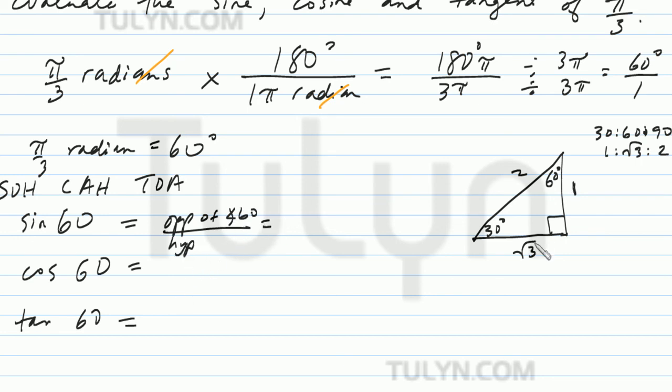So opposite of angle 60 is going to be radical 3. See right there? So then, hypotenuse is 2, so sine of 60 is going to be radical 3 over 2.